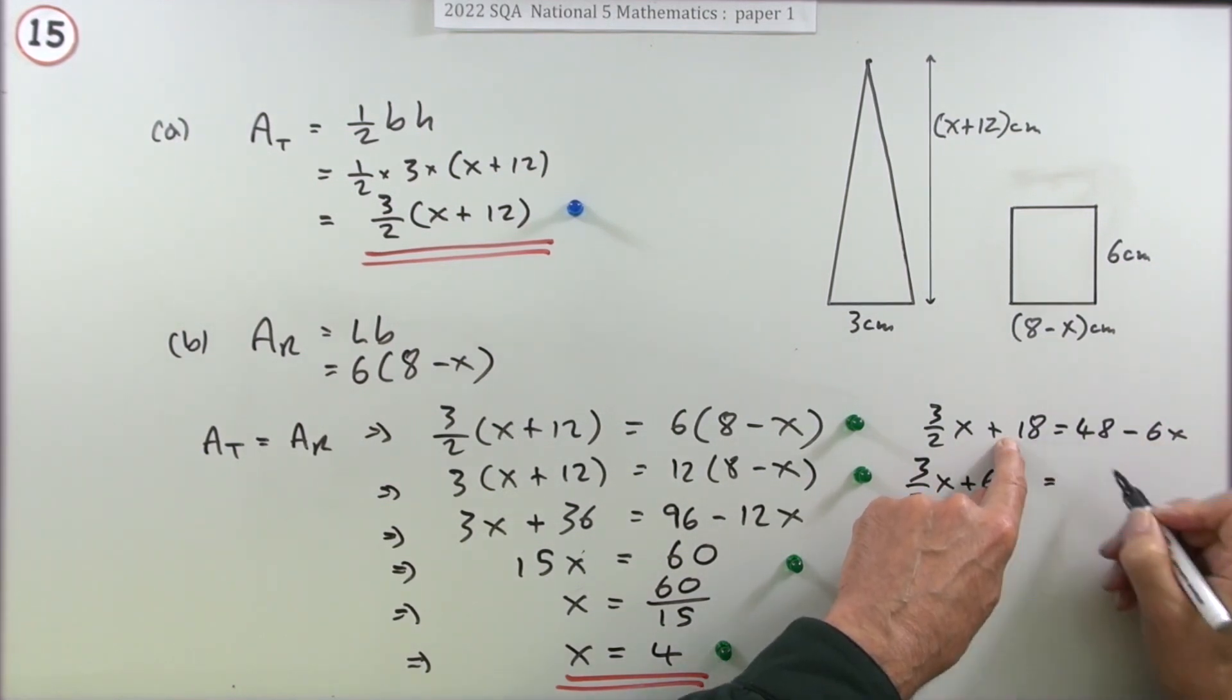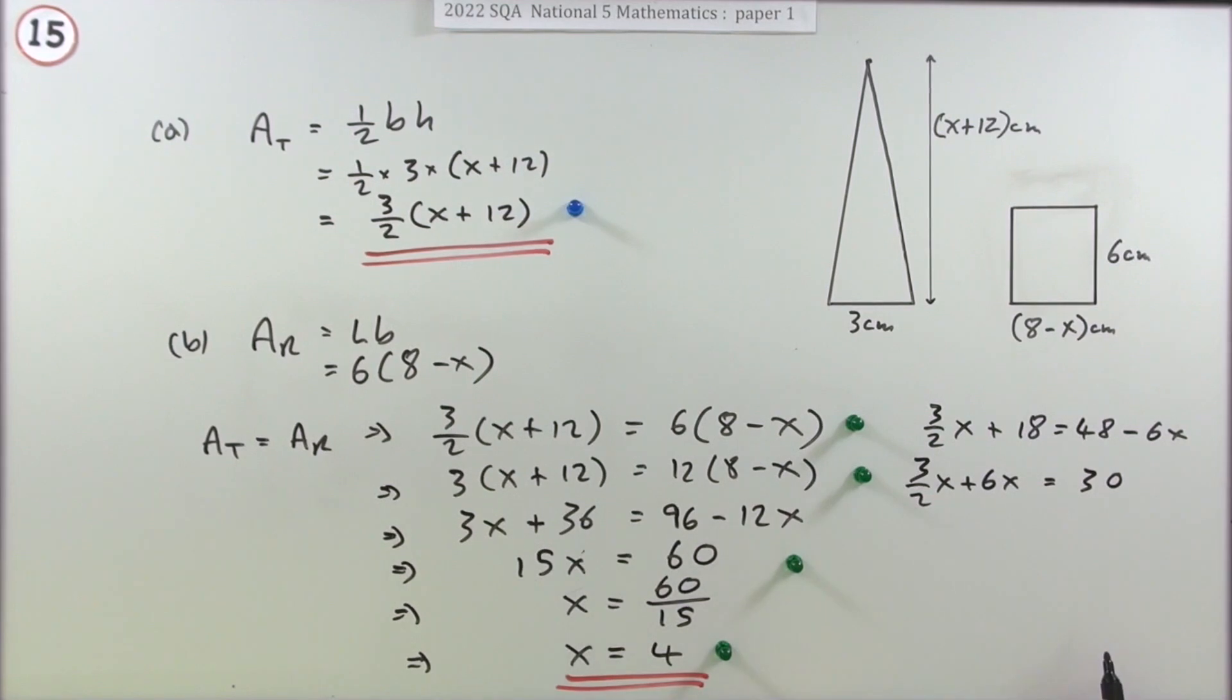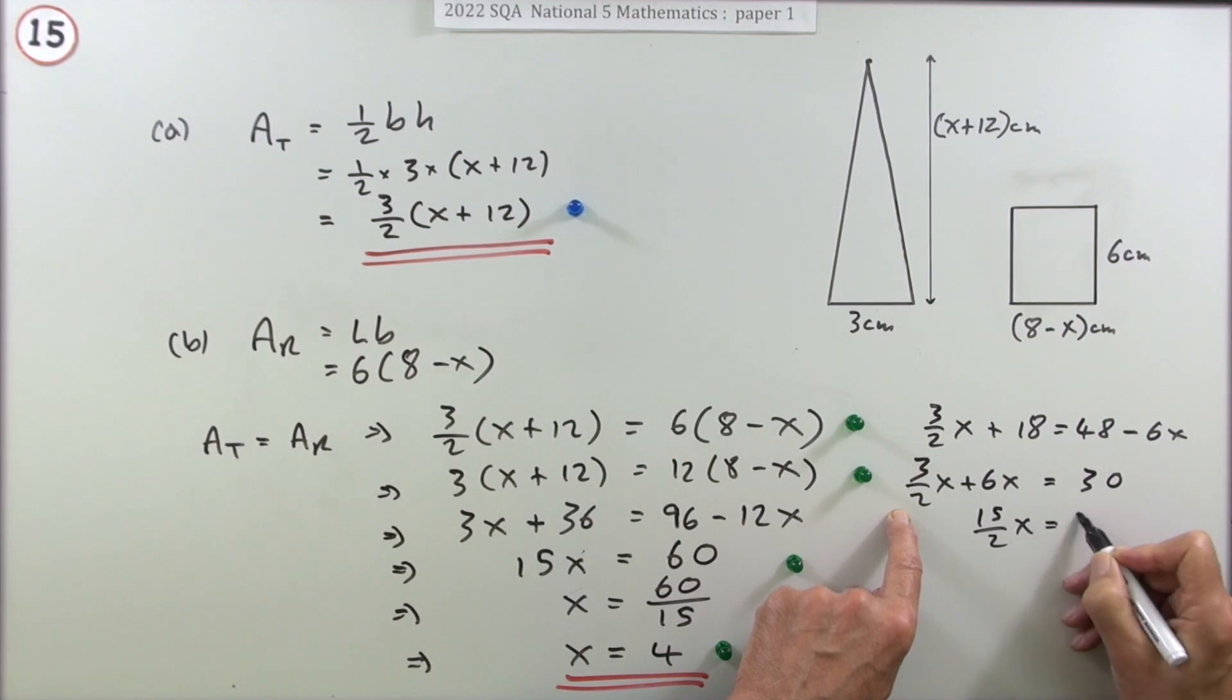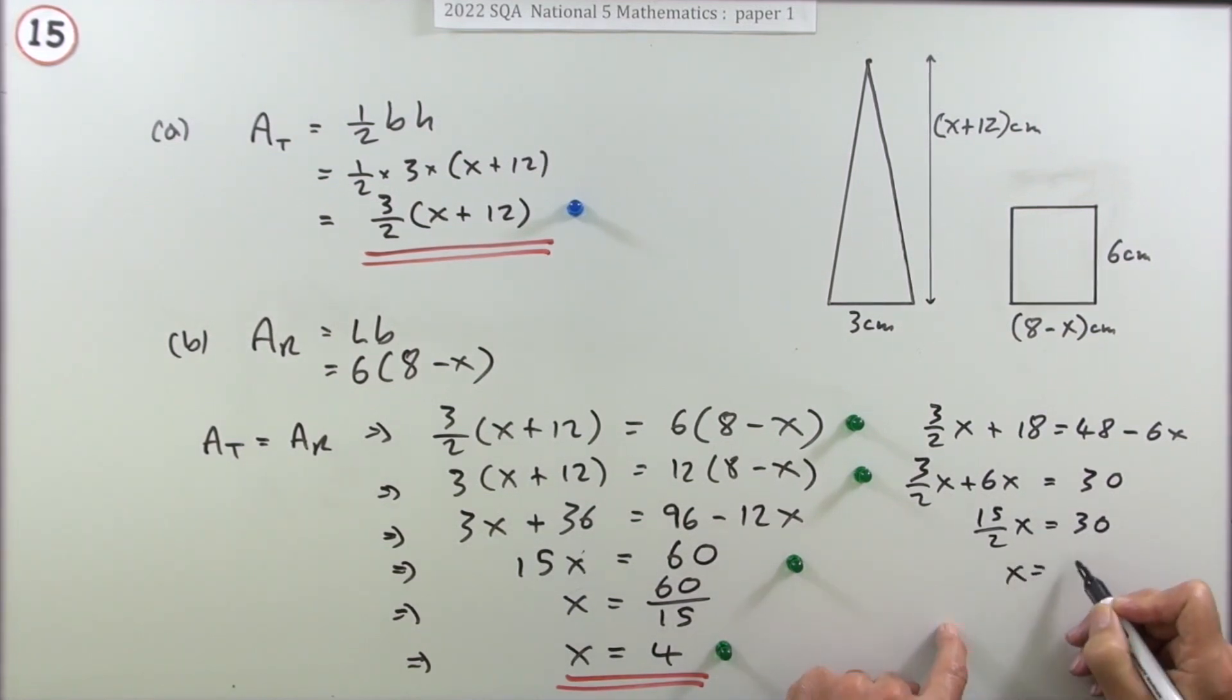Will be the 48 take away the 18, well that's easy, that's 30. So that would become 15 upon 2x equals the 30. So x would be 2/15ths of 30. So x would be, 15 goes in twice, times 2 is 4.